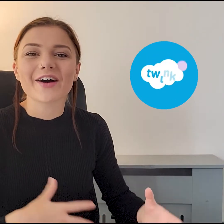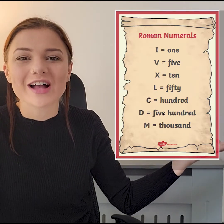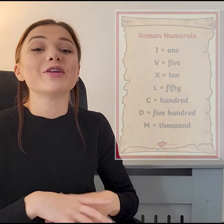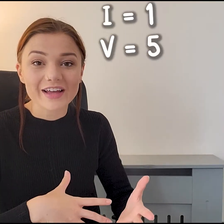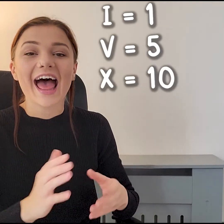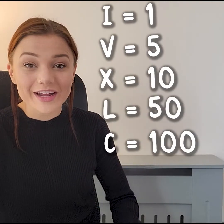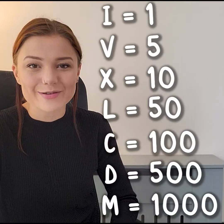Roman numerals are any letter or group of letters which represent a number in the Roman numerical system. Here is a Roman numerals chart which can help us to write out Roman numerals. Roman numerals are made of seven different letters: I equals 1, V equals 5, X equals 10, L equals 50, C equals 100, D equals 500, and M equals 1000.